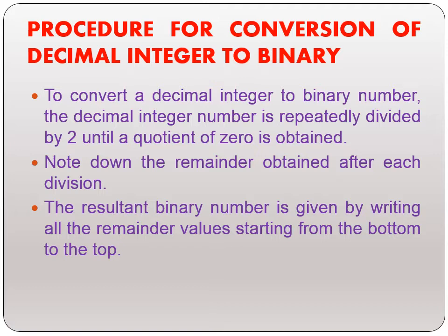In order to convert a decimal number into a binary number, we need to divide it repeatedly by 2 until we get the quotient as 0.